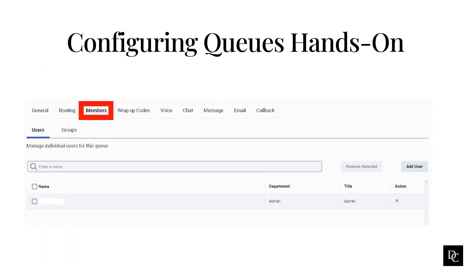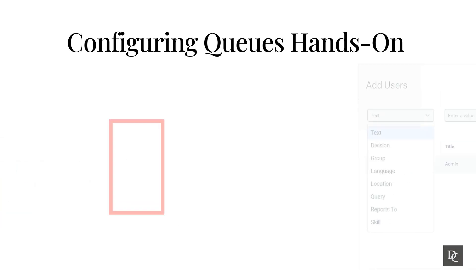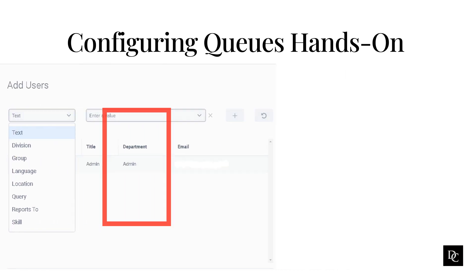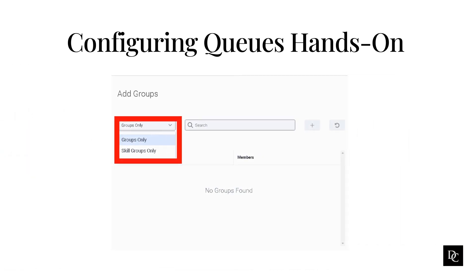In the Members tab is where you will add users or work teams — you cannot add both. To add a user, click Add User. In the add users box, you can filter by text, division, group, or skill. Enter the value and in the space below the users will pop up. Select the user and press the Add Selected button. In the add groups box, you can filter by groups only or skill groups only. Select which one you want to filter on, enter the name, and in the space below the groups will pop up. Select the group and press the Add Selected button.